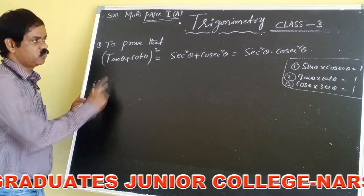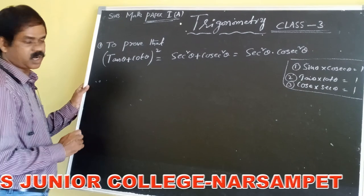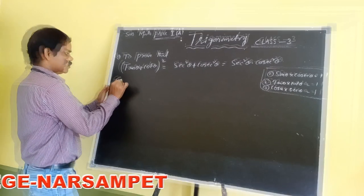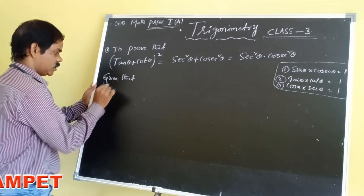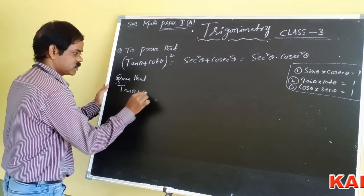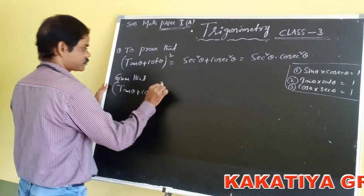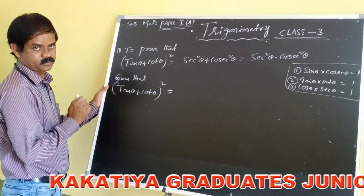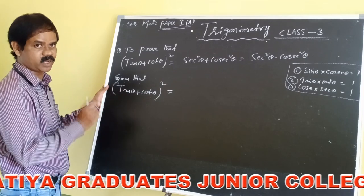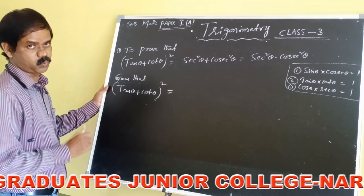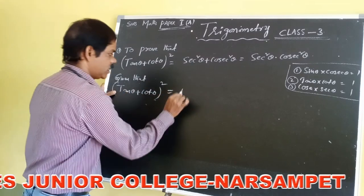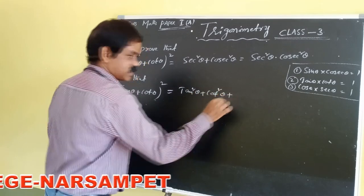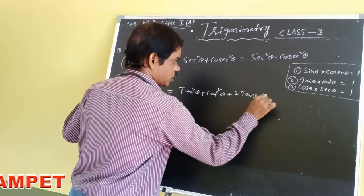By using that concept, you can go through this problem. So first of all, all of you observe the LHS part. Here, given LHS part: tan theta plus cot theta whole square is equals to 1. It is in the form of A plus B whole square. According to algebra, A plus B whole square formula is A square plus B square plus 2AB. So now it becomes tan square theta plus cot square theta plus 2 tan theta into cot theta.